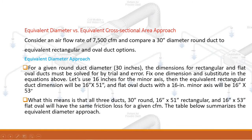Equivalent diameter versus equivalent cross-sectional area approach. Consider an airflow rate of 7500 CFM and compare a 30-inch diameter round duct to equivalent rectangular and oval duct options. For a given round duct diameter of 30 inches, dimensions for rectangular and flat oval ducts must be solved by trial and error. Fixing the minor axis at 16 inches, the equivalent rectangular duct dimension will be 16x51 and the flat oval duct with a 16-inch minor axis will be 16x53. This means all three ducts — 30-inch round, 16x51 rectangular, and 16x53 flat oval — will have the same friction loss for a given CFM.